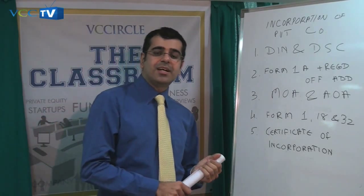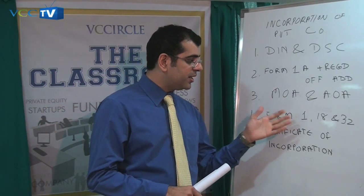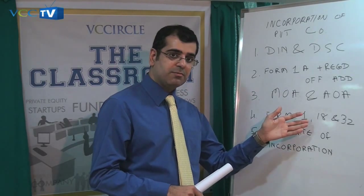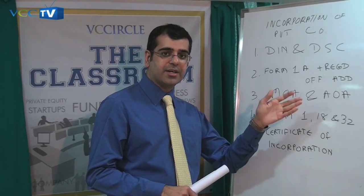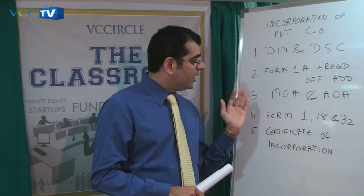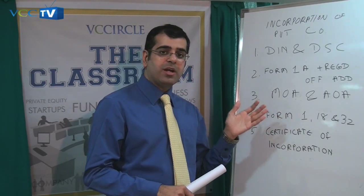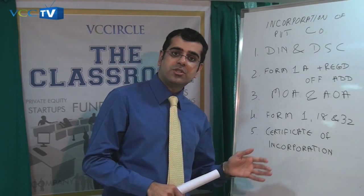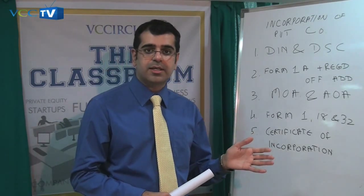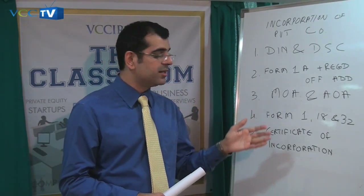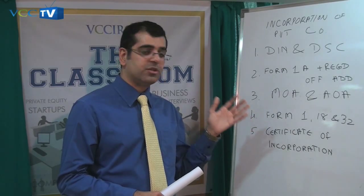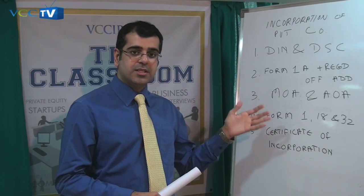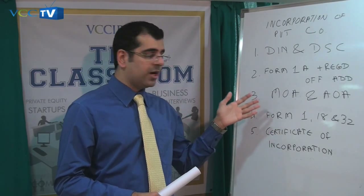Form 1 is the declaration for incorporating a company. Form 18 is for the situation of the registered office of the company, and Form 32 is for the appointment of the first directors of the company. While filing these forms, the Memorandum and Articles of Association are also required to be uploaded. These are first required to be stamped electronically and thereafter signed by the first subscribers to the Memorandum, or the first shareholders of the company, before a witness, and then uploaded electronically.